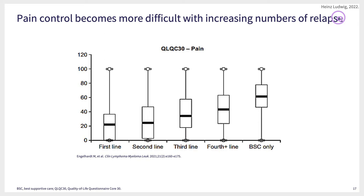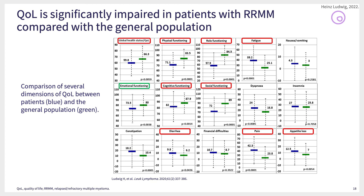The problem with pain and other symptoms is illustrated in a slide from Dr. Engelhardt. When you look at quality of life and specifically the pain item, in first-line treatment pain is relatively well controlled, but with every new relapse it becomes more difficult to control pain sufficiently. A study from our group looked at quality of life in patients with relapsed refractory myeloma — the green bars denote quality of life items in our patients, and the blue bars denote quality of life in an age-matched large patient population. You can see the difference.